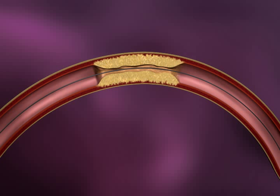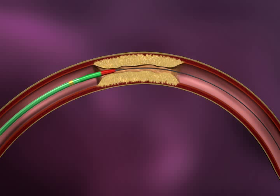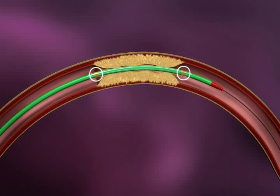Advance the Gateway PTA balloon catheter over the exchange length guide wire until it reaches the stenosis. Cross the lesion with the balloon catheter and position the catheter relative to the lesion to be dilated. Marker bands on the balloon will help guide positioning.